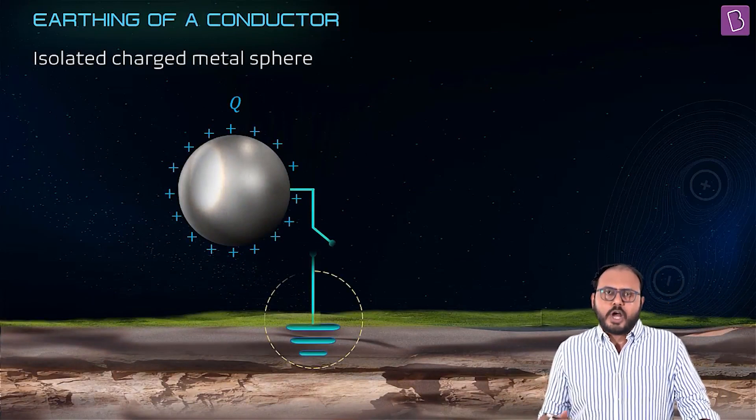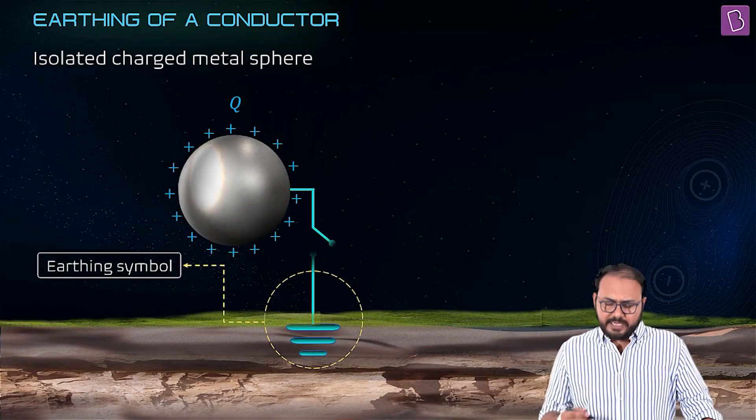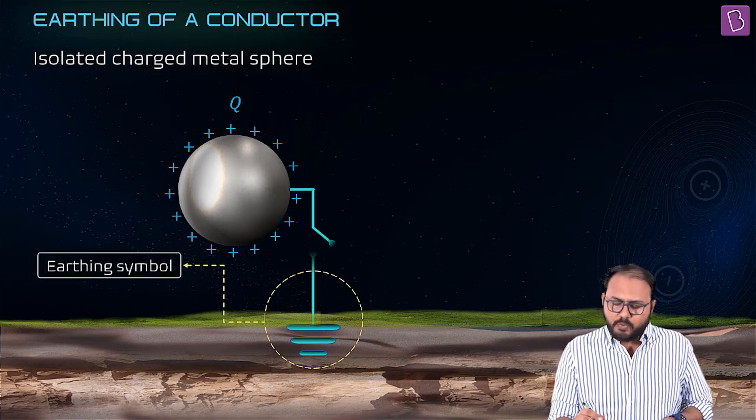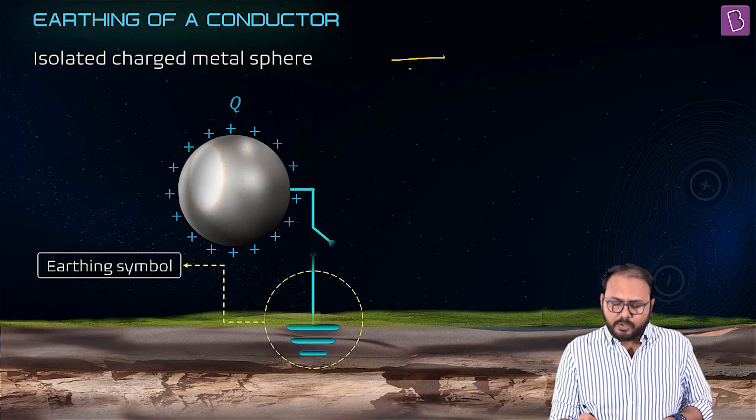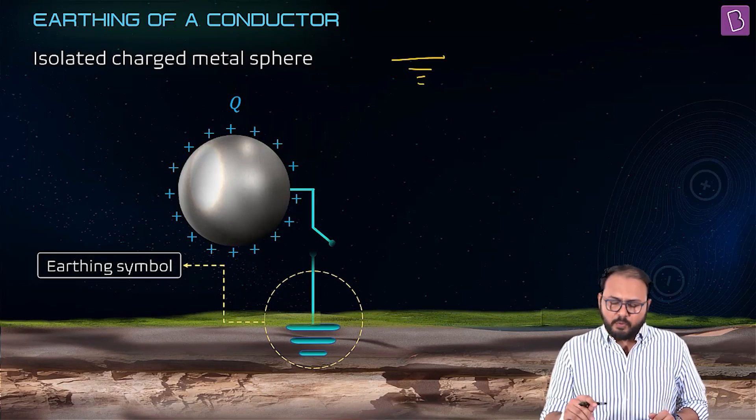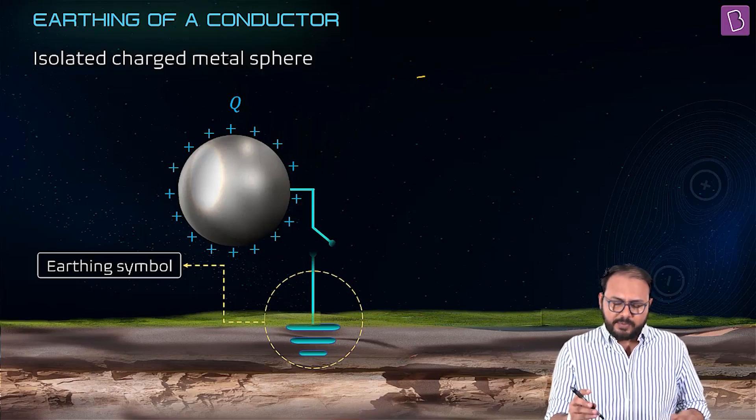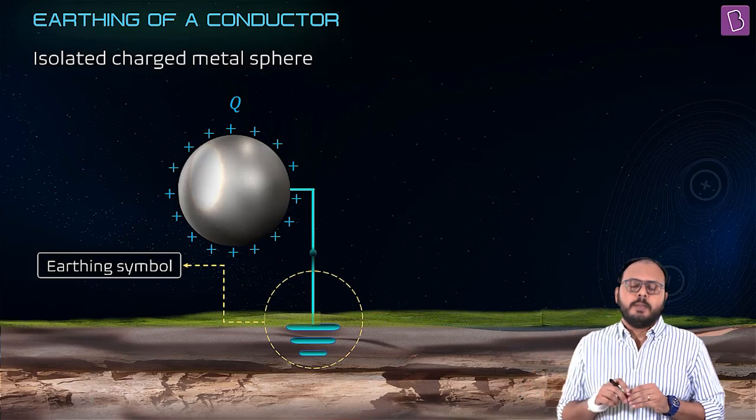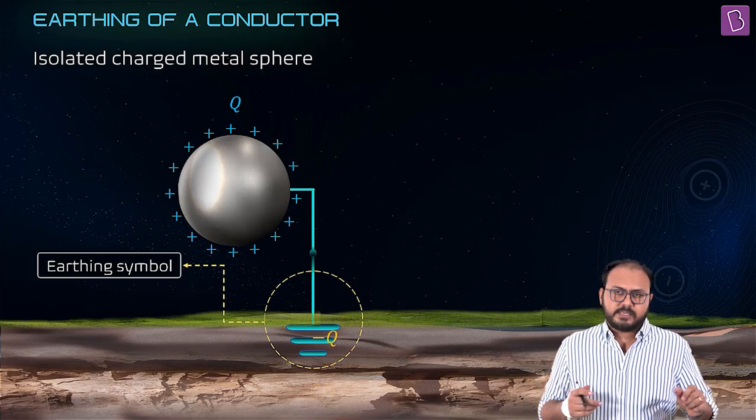You have an isolated charged metal sphere on the screen. Can you see the symbol of earthing? It's actually unequal parallel lines starting from big to small. That's the symbol of earthing, and the moment you complete the circuit, the moment you earth it, what happens? The potential of that conductor becomes zero.